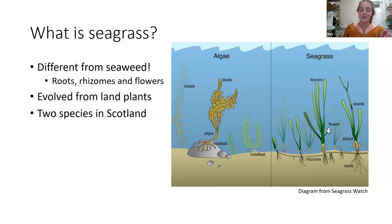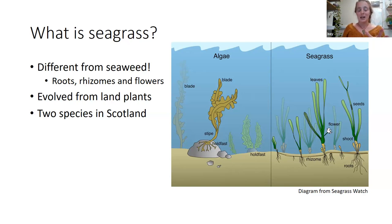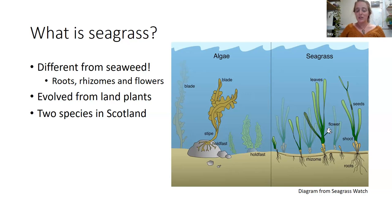There are about 70 species of seagrass around the world, found on all continents except Antarctica. In the UK we have just two, called Zostera marina and Zostera noltii, and those are the ones found in Scotland as well.